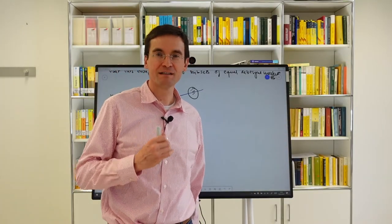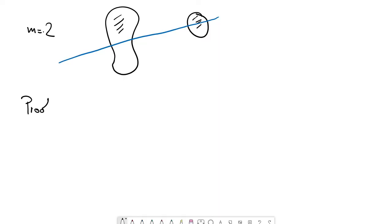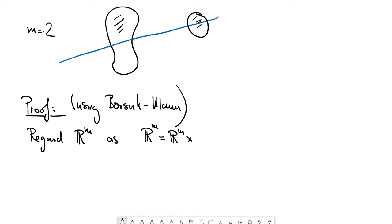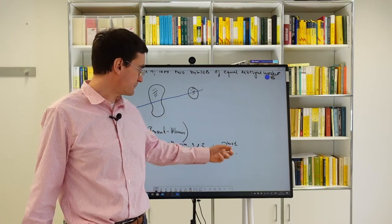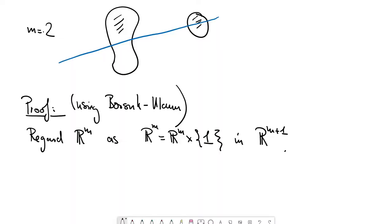Let's prove this theorem now using the Borsuk-Ulam theorem. The starting point is to embed this situation into Euclidean space of one dimension higher. We regard R to the M as a subset, as an affine hyperplane of R to the M plus one.